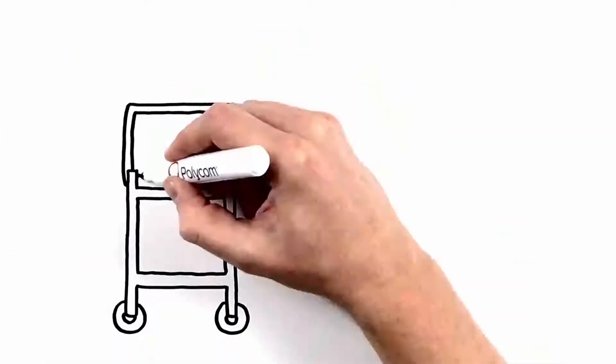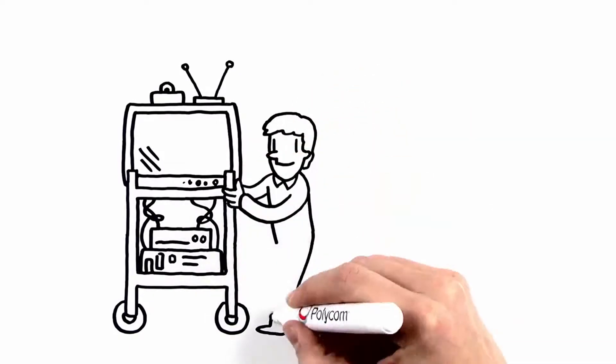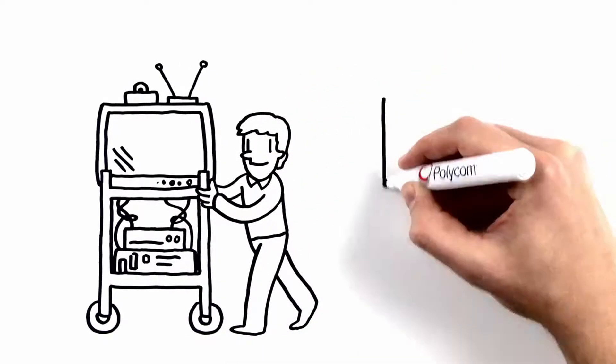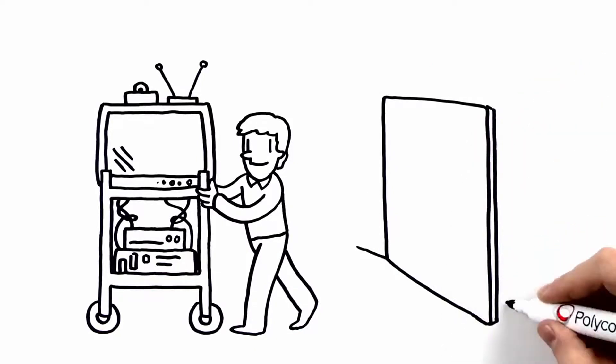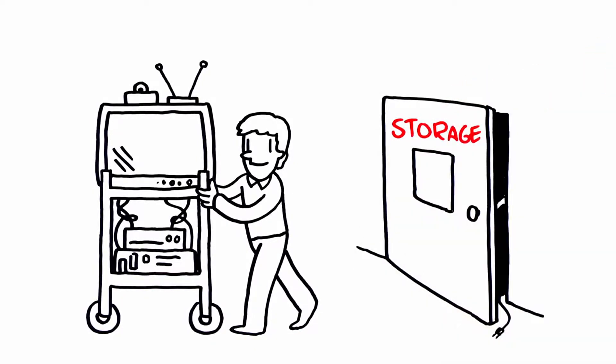In the early days of video conferencing, a cartful of equipment was wheeled into a conference room by an AV technician, and after the users had finished their video conference, the equipment would go back into the closet until it was needed again, days, weeks, or months later.